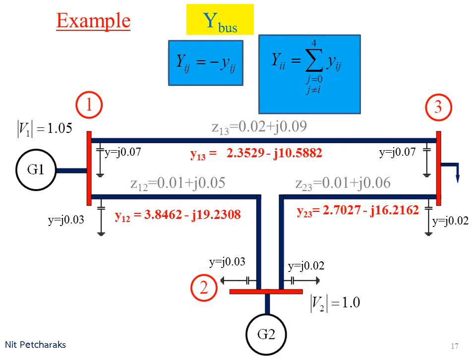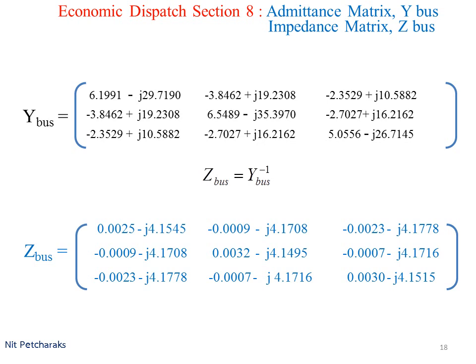First, find the line admittance, which is the reciprocal of line impedance shown in the red color. Find each element in the same manner and put them up in a matrix form of Y bus. Then calculate the bus impedance matrix.